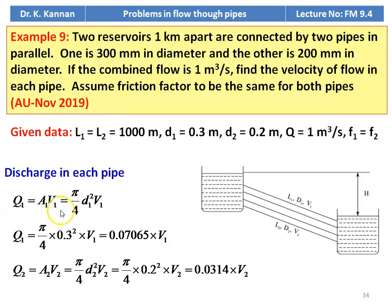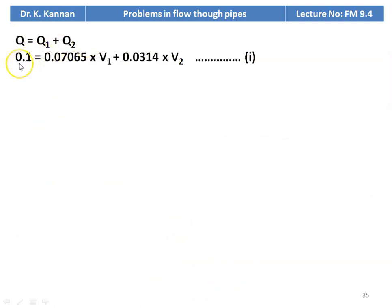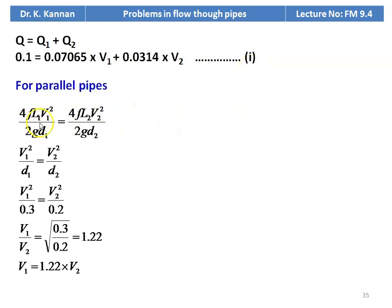Discharge in each pipe: Q1 = A1V1 = π/4 × 0.3² × V1 = 0.07065 V1. Q2 = A2V2 = π/4 × 0.2² × V2 = 0.0314 V2. Total: Q = Q1 + Q2 = 0.1, so 0.07065 V1 + 0.0314 V2 = 0.1 (equation 1). For parallel pipes, head loss is equal: 4FL1V1²/2GD1 = 4FL2V2²/2GD2. Since L and F are equal, V1²/D1 = V2²/D2, giving V1²/0.3 = V2²/0.2, so V1/V2 = √(0.3/0.2) = 1.22, thus V1 = 1.22 V2.